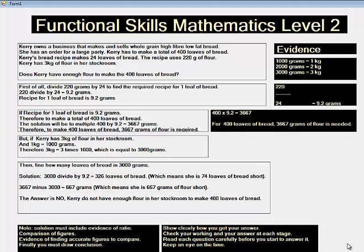If recipe for 1 loaf of bread is 9.2 grams, therefore to make a total of 400 loaves of bread, the solution will be to multiply 400 by 9.2, which equals 3667 grams. Therefore, to make 400 loaves of bread, 3667 grams of flour is required.